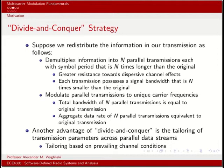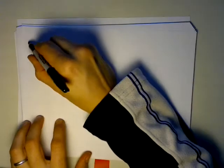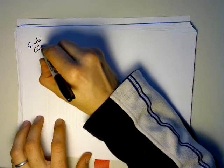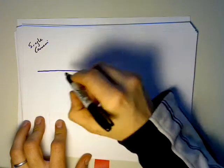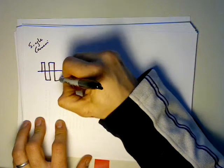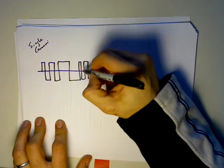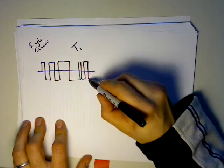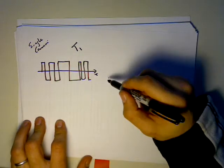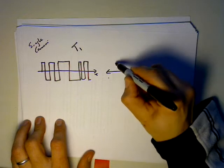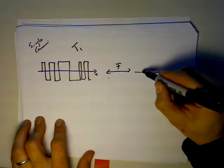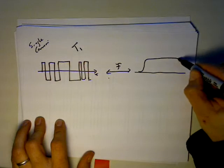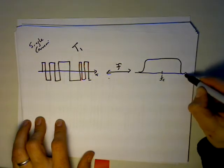Let's see how that looks in both time and frequency by comparing single-carrier and multi-carrier waveforms. A single-carrier waveform has lots of fluctuations over a short period of time — the symbol period T1 is very small. Since bandwidth is inversely proportional to symbol period, very small symbol periods mean very wide bandwidths.